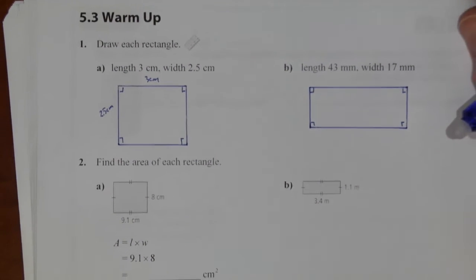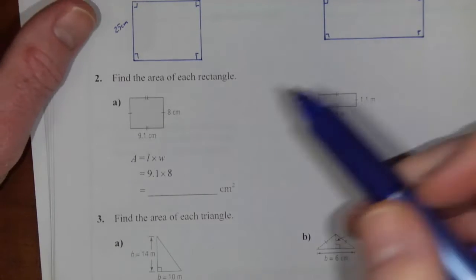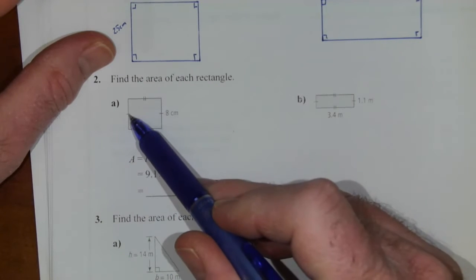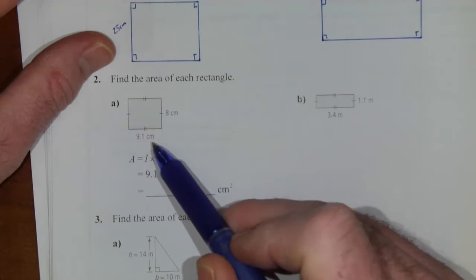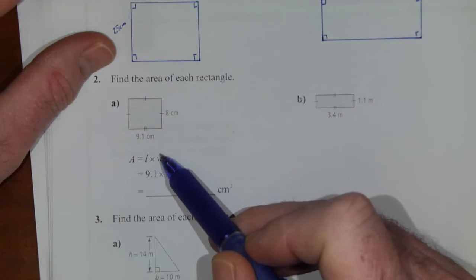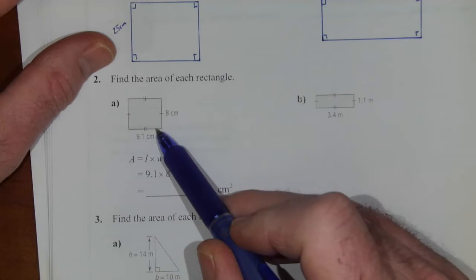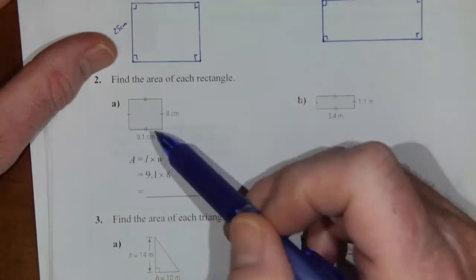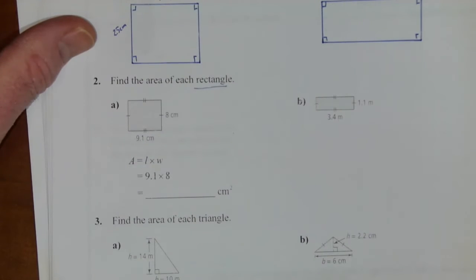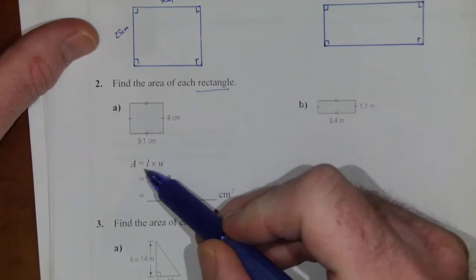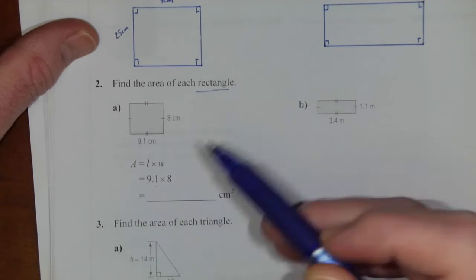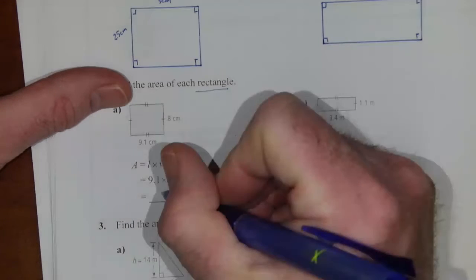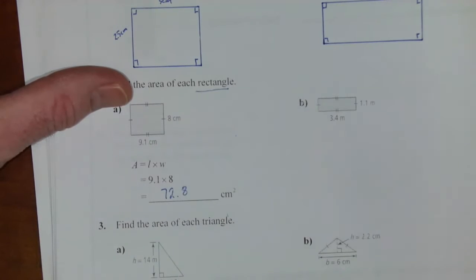Find the area of each rectangle. That's question number two. So we've got 8 centimeters here and here and 9.1 centimeters here and here. Single ticks indicate common size of 8 centimeters. The double ticks or hash marks indicates that these two sides are the same length. It doesn't show the 90 degree corners, but you can assume that since we called it a rectangle. So area of a rectangle is length times width. So in this case 9.1 centimeters times 8 centimeters. And when you do that multiplication you're going to have 72.8 centimeters squared.